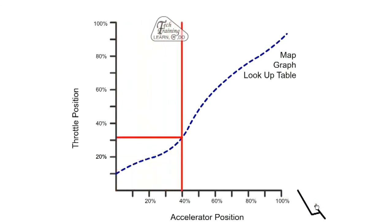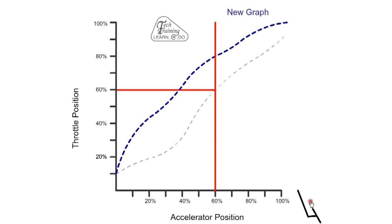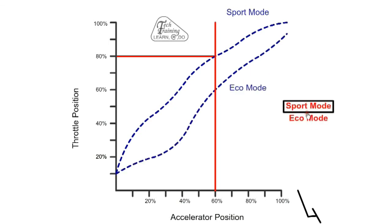As the accelerator is pressed, we get a corresponding change in throttle position according to the graph. At 60% accelerator position, the throttle position is also 60%. Assume the driver wants a more responsive engine and gets the ECU remapped with new software. Now with the new graph, instead of 60% we have 80% throttle opening. Some expensive cars have the option of switching between different programs stored in the ECU. In this case, they are called sport mode and economy mode.